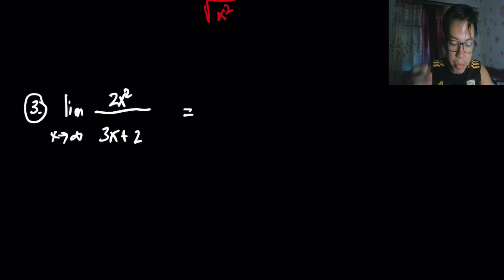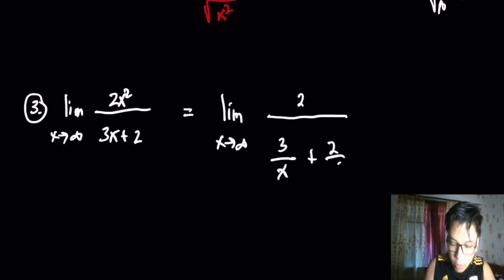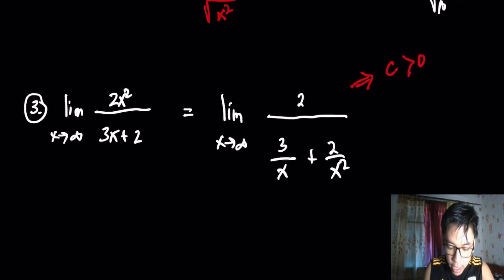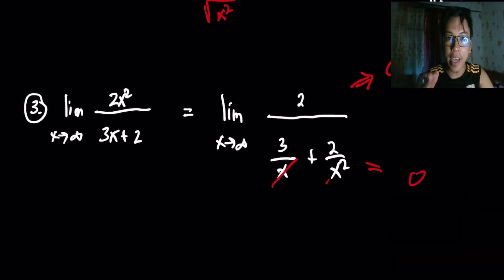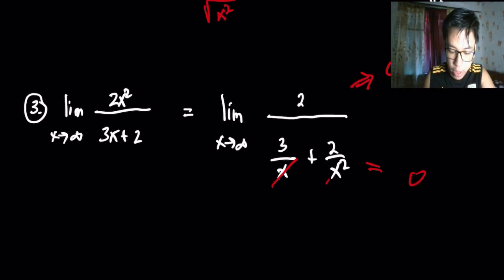Example three: find the limit of 2x² / (3x + 2) as x approaches infinity. Divide both numerator and denominator by x². The numerator becomes 2, and the denominator becomes 3/x + 2/x². The numerator is a positive constant, and if we take the limit of the denominator, both terms go to 0 by the theorem, so the denominator approaches 0.